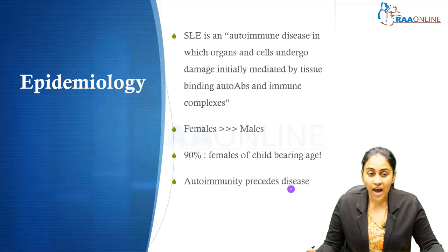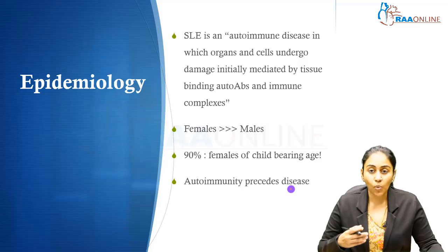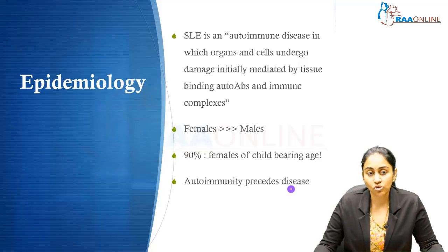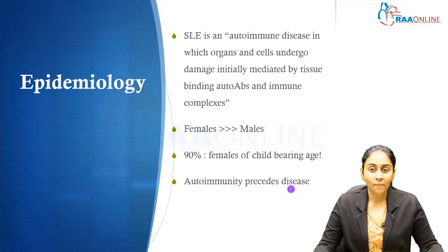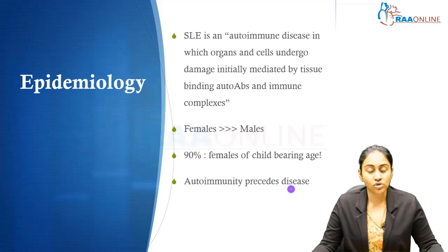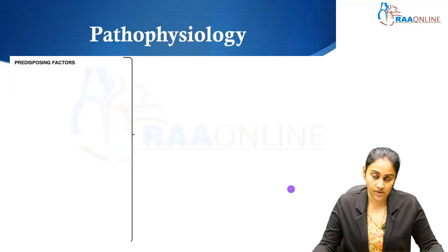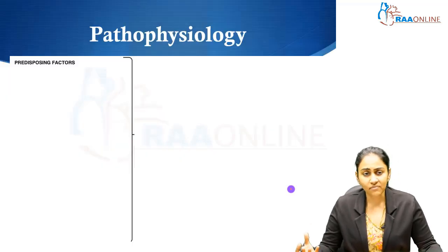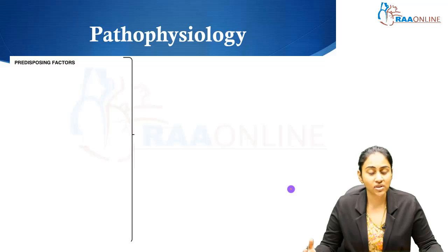It is most often found that these patients have antibodies for quite some time before they start developing clinical manifestations. In this disease, autoimmunity far precedes the onset of clinical manifestations.